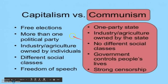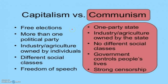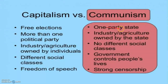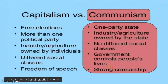This is Karl Marx. At this point, let's talk about capitalism and communism in practice, not just in theory. In capitalist countries, you have free elections and democracy, more than one political party, and industry and agriculture are owned by individual people. There are different social classes — rich, middle class, and poor — and you have freedom of speech. In a communist country in practice, it's different: there is one party, the communist party, and other parties are not allowed. All businesses are owned by the state, including your home — you don't own your home, the government does. There are no different social classes. The government controls much of people's lives — they tell you if you get to go to school, they tell you where you work — and there is strong censorship.